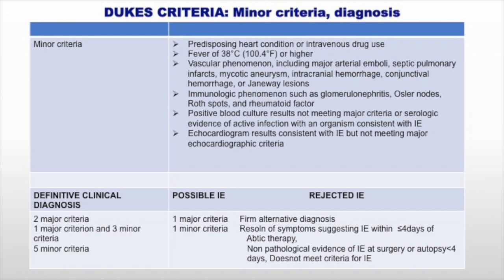For definitive infective endocarditis, we use pathological and clinical criteria. For possible infective endocarditis, we use only clinical criteria where you have one major criterion and one minor criterion. For rejected infective endocarditis, the patient does not qualify for possible or definitive endocarditis, and usually the symptoms resolve after a few days.